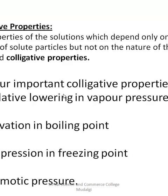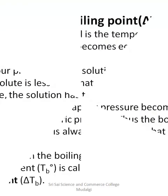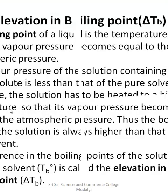If you have any doubts regarding relative lowering of vapor pressure, you can go to the previous videos. Now I am going to start with the second type of colligative property called elevation in boiling point. Please remember that out of these four colligative properties, any one will be asked in the numerical problems — question number 28A for three marks. Elevation in boiling point is represented by the symbol ΔTb, where delta T refers to change in temperature with respect to boiling point.